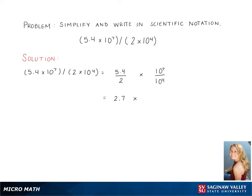The first part gives us 2.7 and the second part gives us 10 to the 3rd. 2.7 times 10 to the 3rd is our final answer.